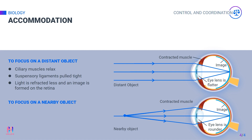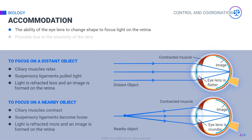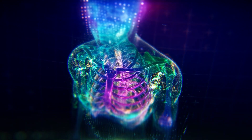When you want to see an object that is present near the eyes, the ciliary muscles contract, which loosens the suspensory ligaments. This makes the lens thick and round. A thick lens refracts more light and thus helps to focus the light on the retina, allowing for close vision.